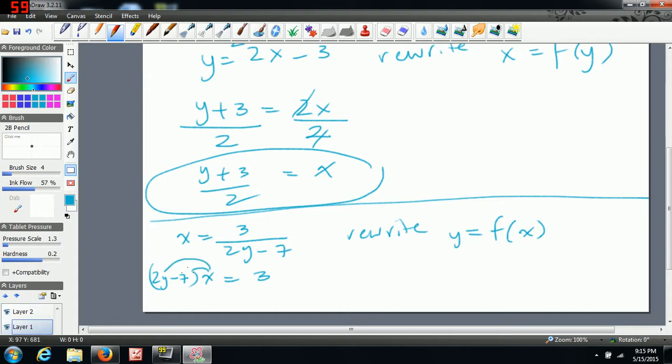Then what you're going to do is multiply the x in. So at that point, you get 2yx minus 7x equals 3. And now we're trying to solve for y. So now we're just going to move everything away from y. So 2yx is equal to 3 plus 7x.